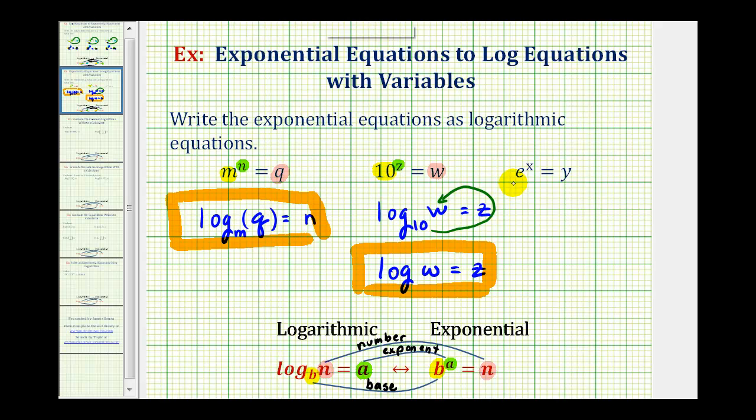And now for our last example, we have E to the X equals Y, so our base is E, the exponent is X, and the number is Y. So again, we'll start with a logarithm and an equal sign. Our base is E, so we have a little E here. The exponent is X, so the log must equal X. And this is equal to Y, so our number is Y.